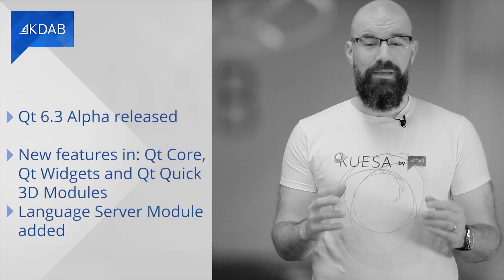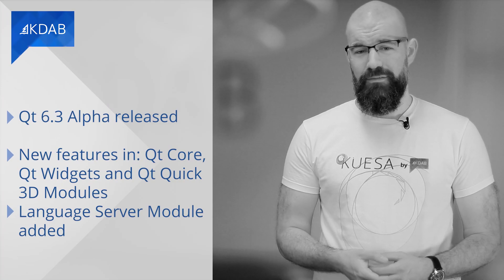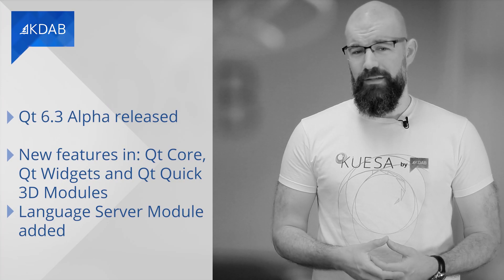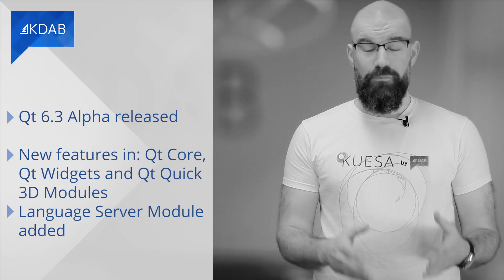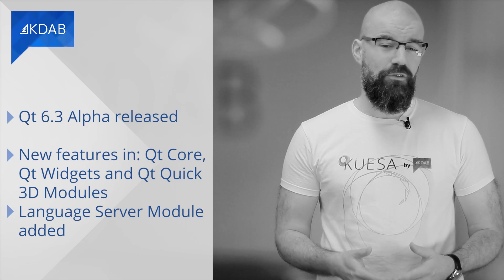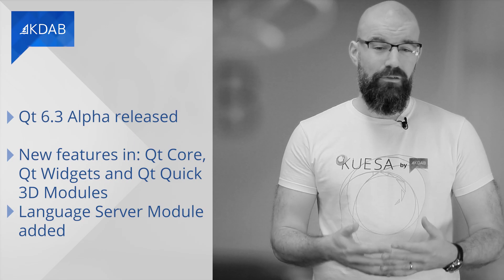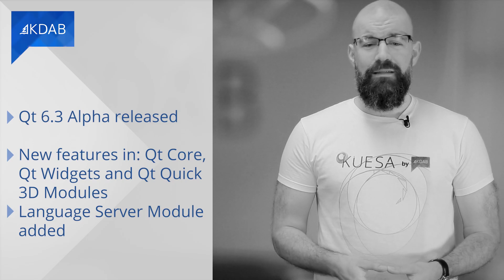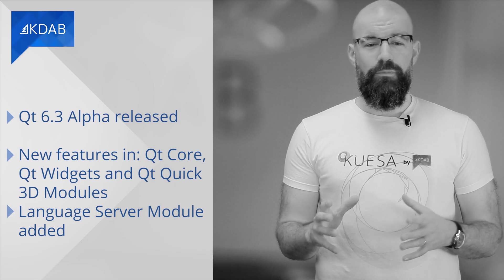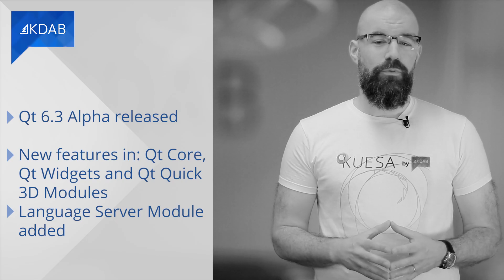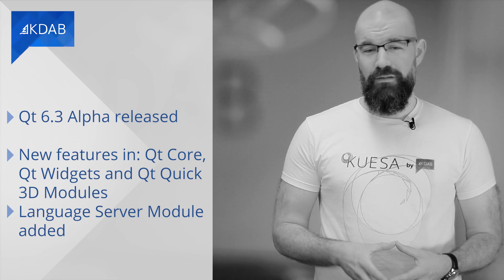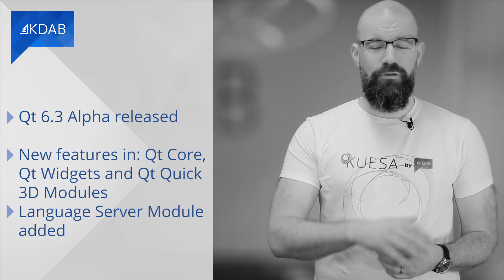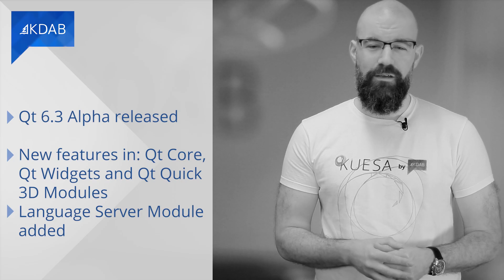In the middle of January, the Alpha version of Qt 6.3 was released and is available for testing. This version adds new features, especially in the Qt Core module, Qt Widgets module and Qt Quick 3D module. It also adds a Language Server module that implements the Language Server Protocol specification and the JSON-RPC 2.0 protocol, and reintroduces the Qt PDF module.